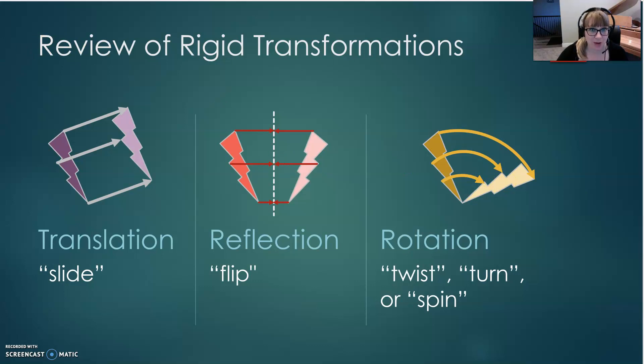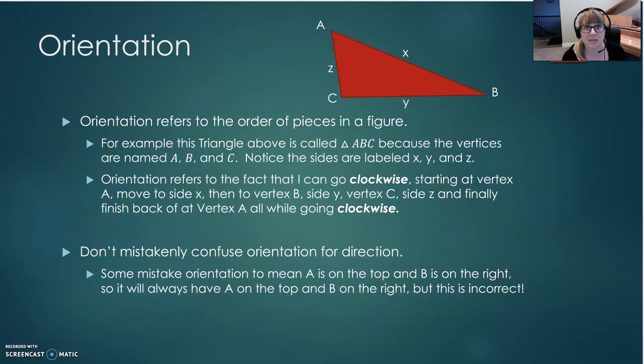Now that we have reviewed our transformations, let's talk about orientation. Orientation refers to the order of the pieces that make up a figure. For example, we have triangle ABC here. It's called triangle ABC because we have the vertices labeled A, B, and C. Notice that we also have our sides labeled X, Y, and Z, but the triangle is named according to the vertices.